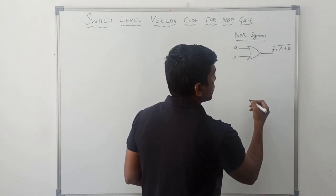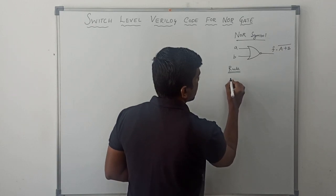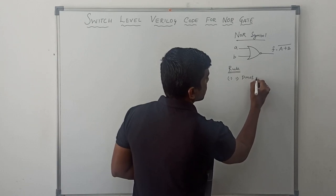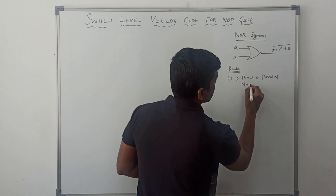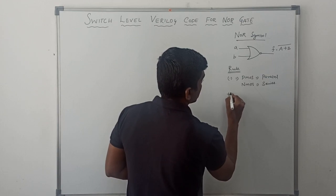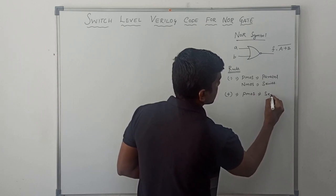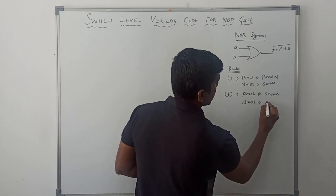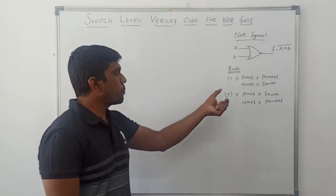Before drawing the transistor level circuit, I just recall the rule. In the boolean expression, if the dot operator is present, P-MOS connects in parallel and N-MOS connects in series. If the plus operator is present in the boolean expression, P-MOS connects in series and N-MOS connects in parallel. This is the basic rule I will follow.